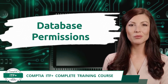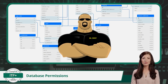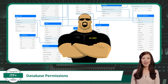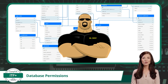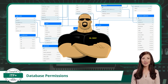Database Permissions. In a relational database, permissions are the rules you establish for who can access and manipulate your structured data tables. By using SQL commands, you can grant certain users the ability to perform specific actions, such as reading or editing data in particular tables.